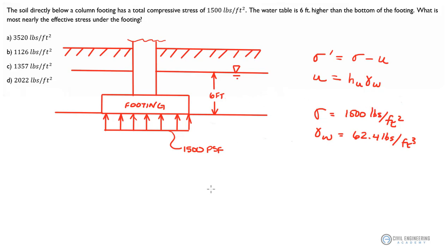But the unit weight of water I know is 62.4 pounds per cubic foot, and I know my depth. Let's see if we can't get at this. So if I say that my effective stress, or my sigma prime, equals my total stress, 1,500 pounds per foot squared, minus my pore water pressure, which is going to be the depth of my water at 6 feet times the unit weight of water, 62.4 pounds per foot cubed.